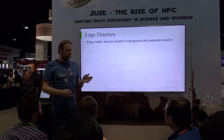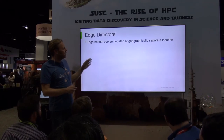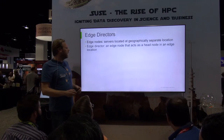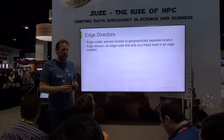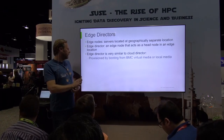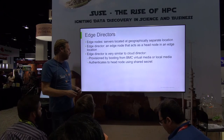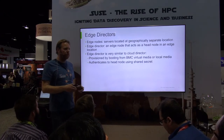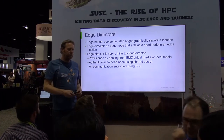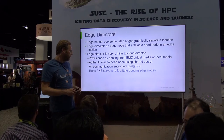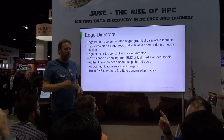Cloud extension involves a cloud director; extension to an edge location has edge directors. Edge nodes are servers in geographically separate locations, and one of those servers is special — it serves as an edge director, acting like a head node for the edge nodes at that location. It's provisioned by booting from BMC, virtual media, USB, or DVD. It authenticates to the head node using a shared secret, and all communication between the edge location and the core cluster uses SSL with certificate-based authentication. It also runs a PXE server on the private edge network so you can PXE boot additional nodes at that location.